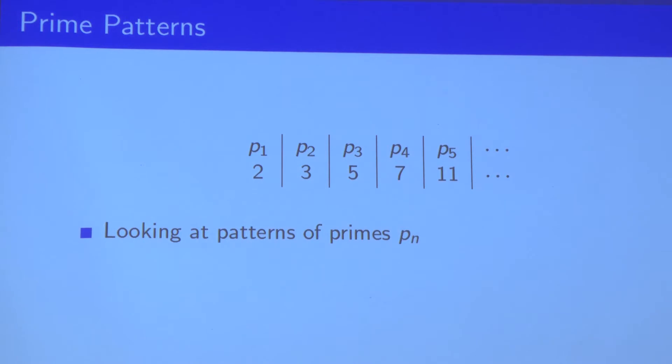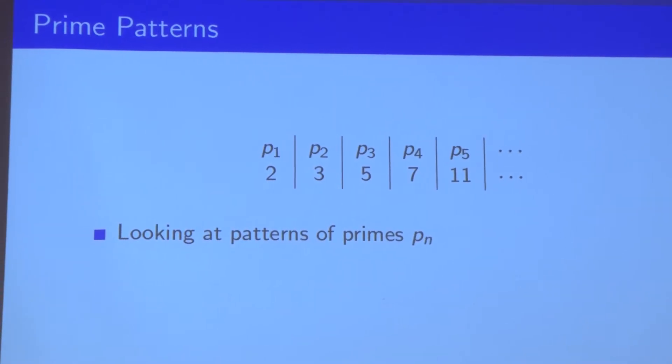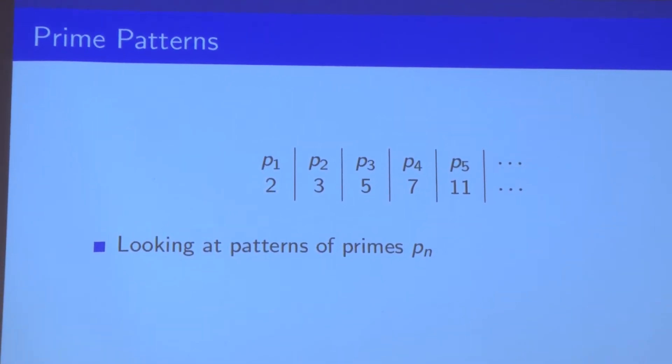Before we investigate the nature of these patterns, let's talk about, for the specific case of dividing by three, what are the possible remainders? Well, the possible remainders are zero, one, and two.